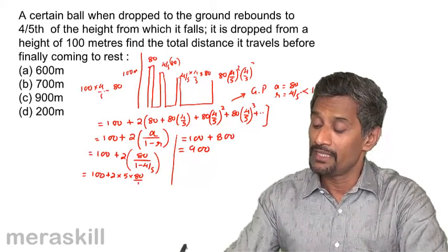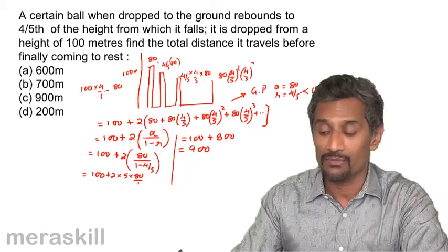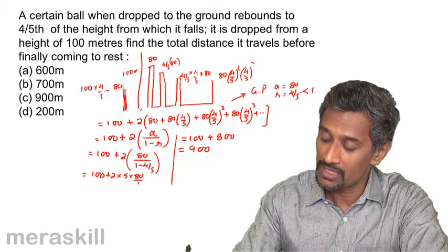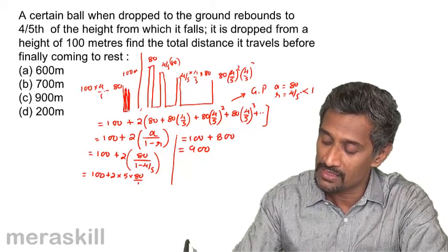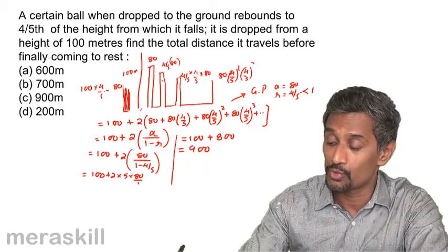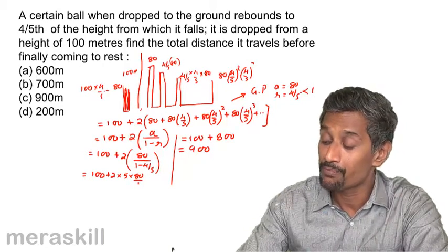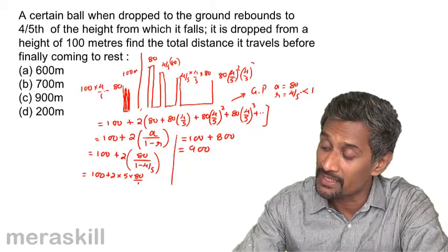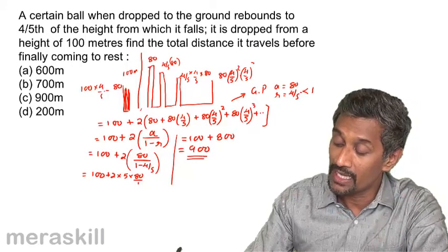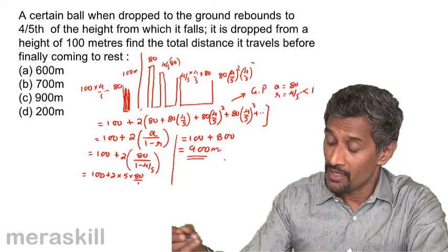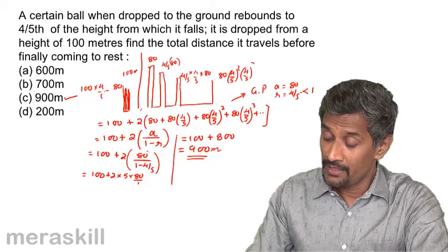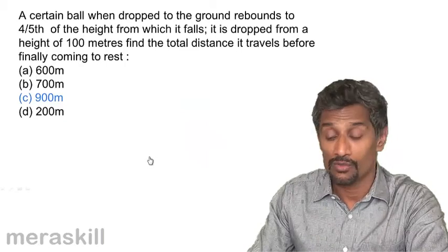Note that 'distance' here refers to the total vertical distance traveled, not horizontal displacement — the ball bounces in place. The total vertical distance traveled is 900 meters, which tallies with the given answer.